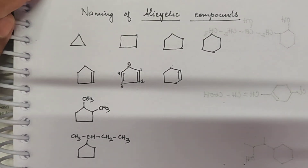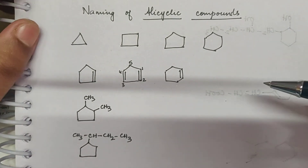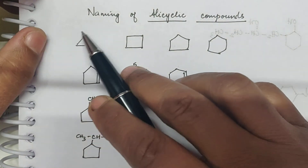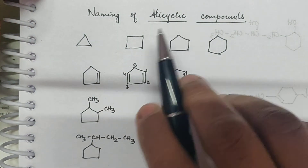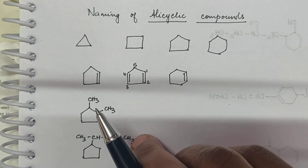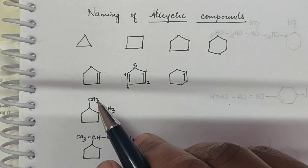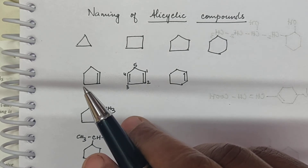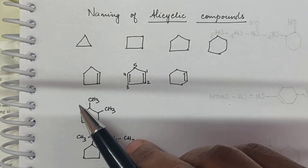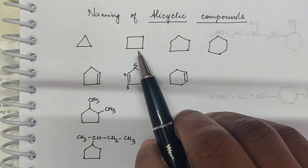Good morning children. Today let us see a few alicyclic compounds and how to name them. These are all cyclic compounds and they are called alicyclic. Aromatic means it should have a benzene ring. Even those which do not contain a benzene ring are also considered as aromatic — that we will see a little later in the next chapter.